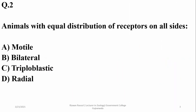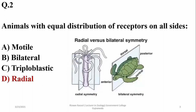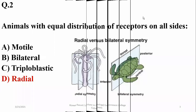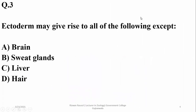Question two: animals with equal distribution of receptors on all sides are radially symmetrical, because they are usually sessile and non-motile. Bilaterally symmetrical animals have cephalization — distribution of more receptors at the anterior end.